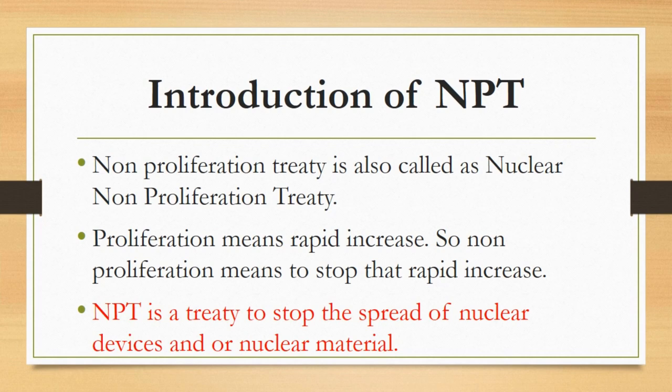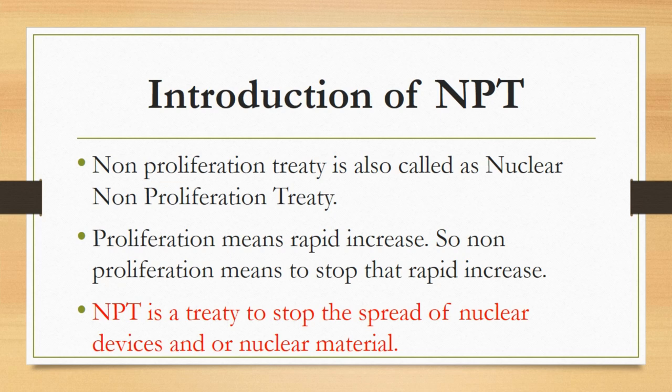First, an introduction to this treaty. Keep in mind that the Non-Proliferation Treaty is also called the Nuclear Non-Proliferation Treaty — they are both the same thing. Proliferation means rapid increase, so non-proliferation means to stop that rapid increase. By attaching 'nuclear' with this notion, it becomes a treaty to stop the spread of nuclear devices and nuclear material — which means to stop the increase or multiplication of nuclear weapons.